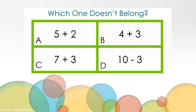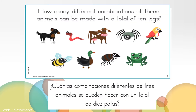Which one doesn't belong? Maybe you thought A doesn't belong because this equation does not have a 3 in it. Maybe you thought B because it starts with a 4 — 4 is an even number in the addition equation. Maybe you thought C because the sum, which means answer, is 10. Maybe you thought D because it is a subtraction equation. There are so many different ways to justify our thinking with which one doesn't belong.